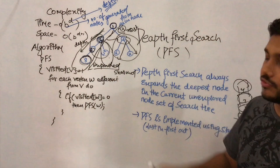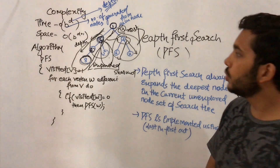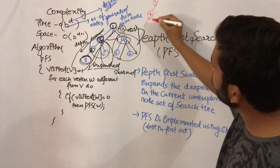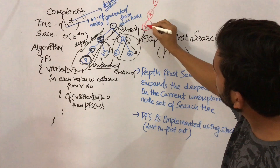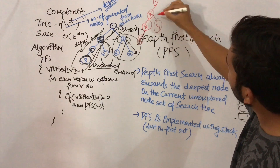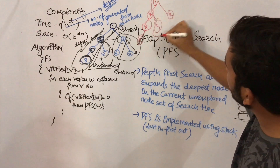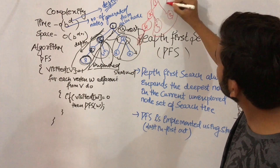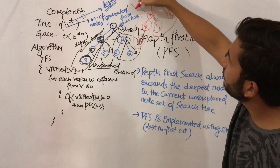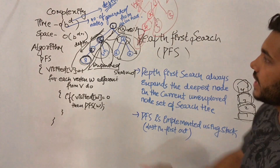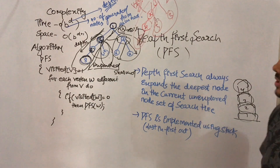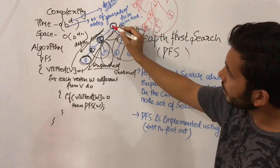The time complexity of depth first search is less than that of breadth first search because you don't need to store all the nodes. Suppose you are exploring node 2 — you only need to store that node in memory; you don't need to store nodes 5 or 3. Once you have explored all the nodes, those nodes are freed from memory.